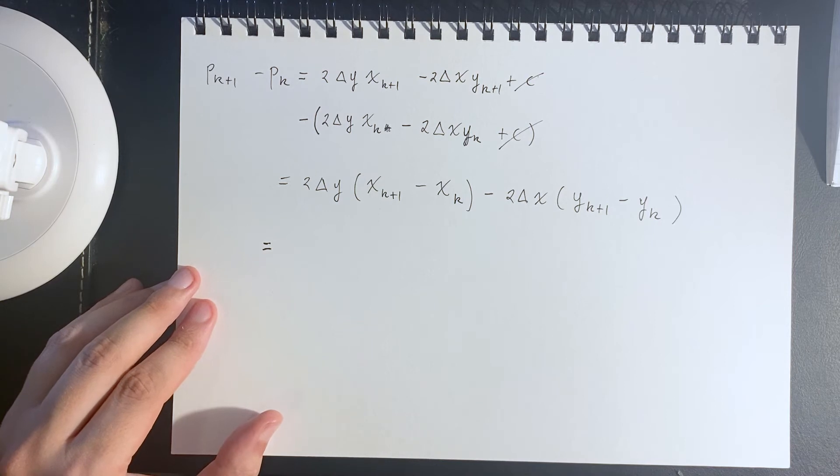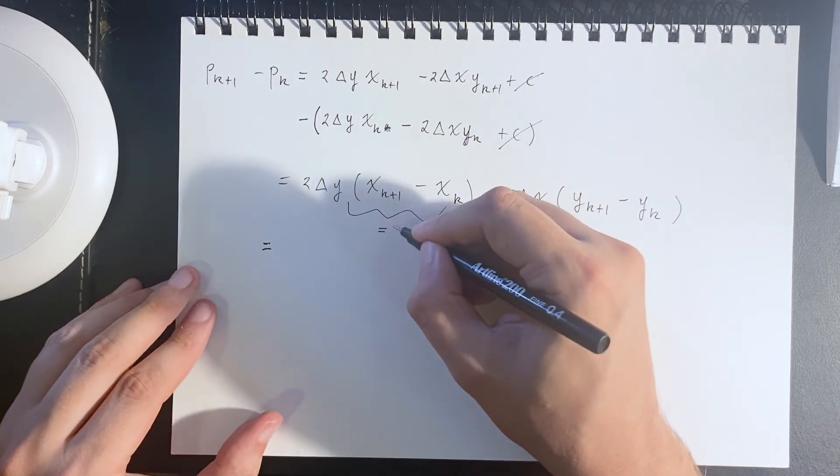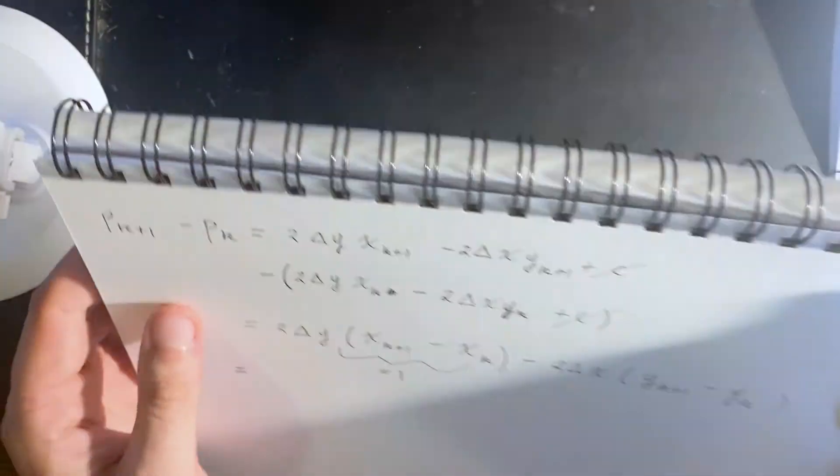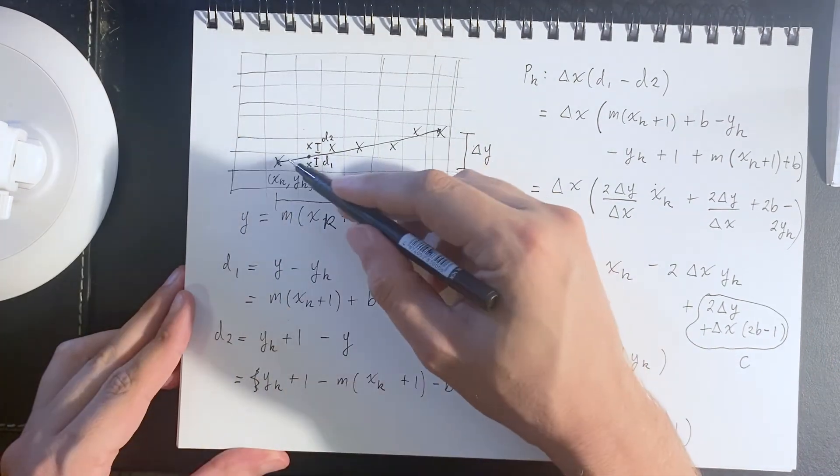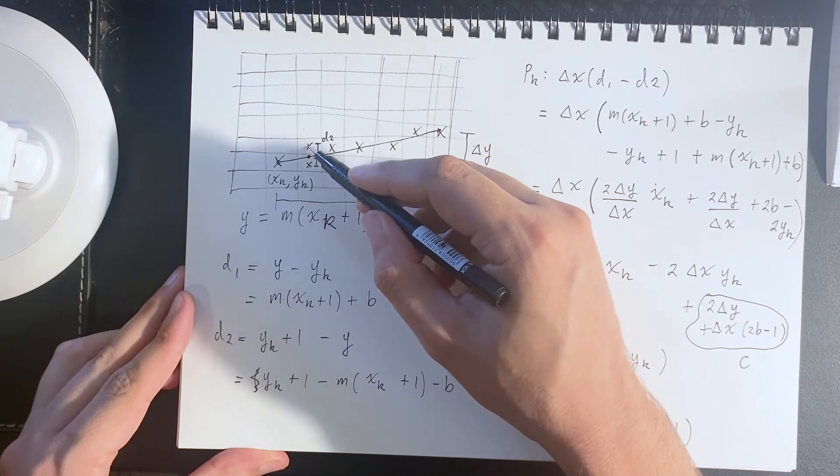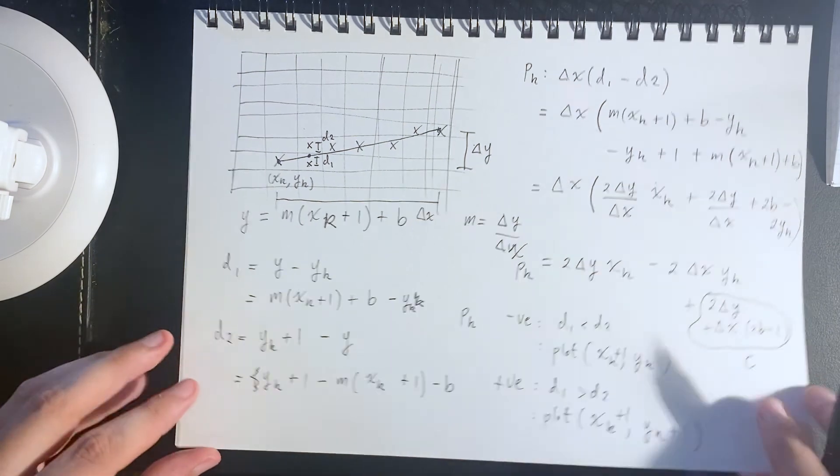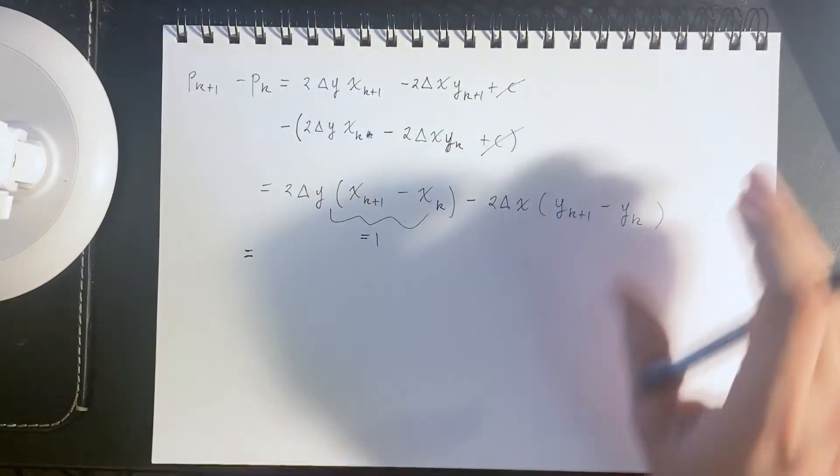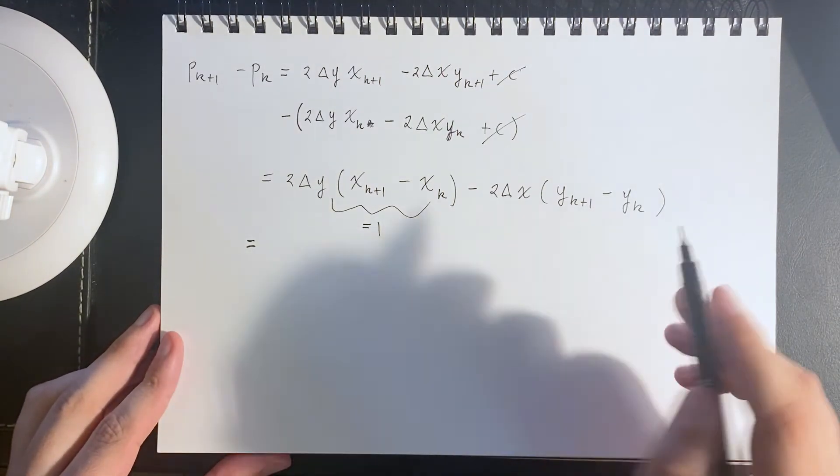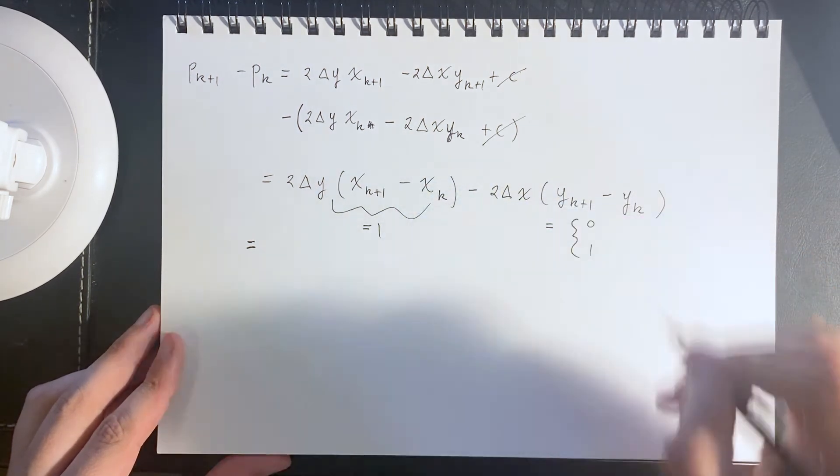What we can also say here is that the x difference will always be 1 in this simple case. What we're doing is constantly stepping across by 1 on the x and then choosing to either stay at the same y value or step up by 1 on the y. The y difference between successive points is fixed at 1, and the y difference will either be 0 or 1.